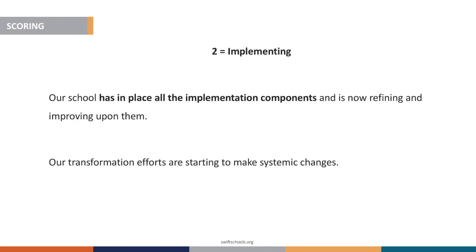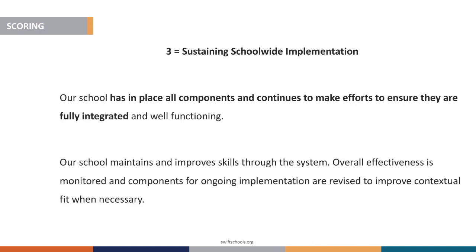If a school has all of the implementation components in place and is now working to refine and improve upon them, then you are in the implementing stage, where transformation efforts are starting to make systemic changes. To score a 3 — sustaining school-wide implementation — your school would have all components in place and also be working to ensure they are fully integrated and well-functioning, monitoring overall effectiveness and revising components to improve contextual fit when necessary.